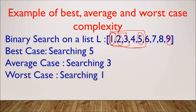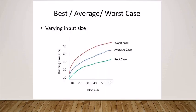Usually when attempting questions, worst case complexity is asked, or best case may be asked, but we usually work on worst case complexity. We avoid average case complexity because it is difficult to find — for the same example, average case could be finding 2, 3, 4, 6, 7, or 8, making it hard to calculate. Looking at the graph: best case needs the least time, average case needs more time than best case for the same input size, and worst case needs the maximum time.